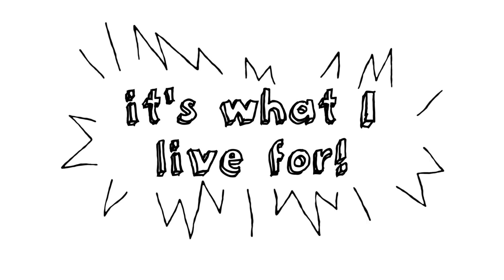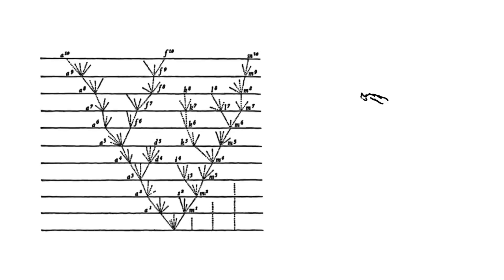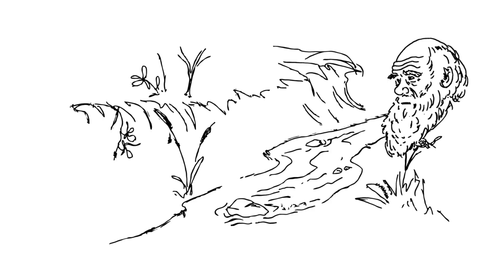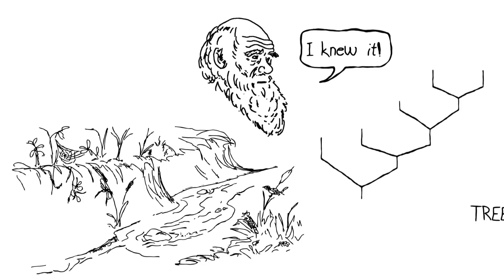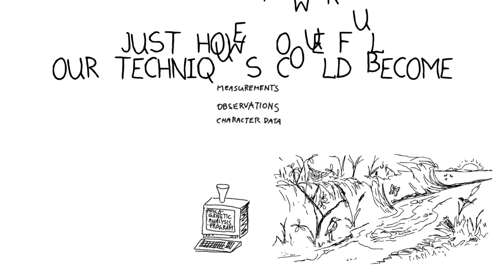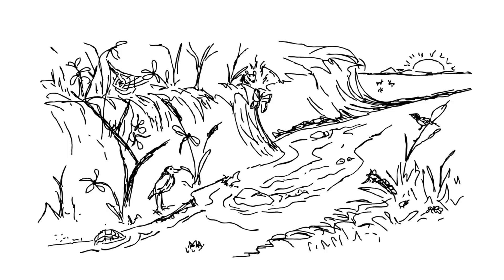One of the first ever cladograms appeared in the work of none other than Charles Darwin, who recognized the importance of evolutionary trees. Darwin knew that these trees reveal lineages and big-picture biodiversity against a background of enormous time. What he didn't know was just how powerful our modern techniques could become in telling this spectacular story, and how useful these trees are in helping us protect Earth's amazing but threatened biodiversity.